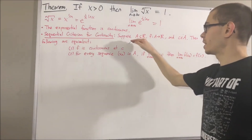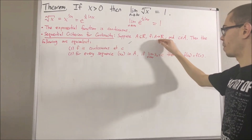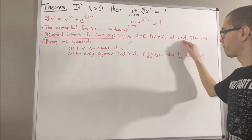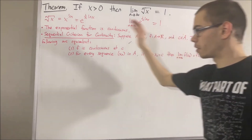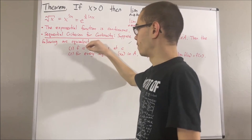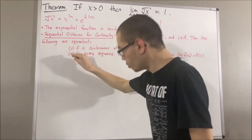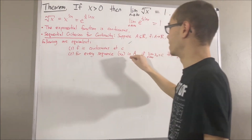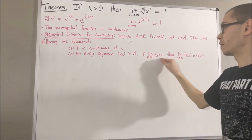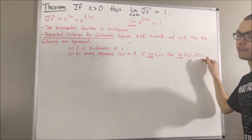Suppose A is a subset of the real numbers, f is a function from A to the real numbers, and c is an element of A. Then the following are equivalent. One: f is continuous at c. Two: for every sequence x_n in A, if x_n converges to c, then f of x_n converges to f of c.